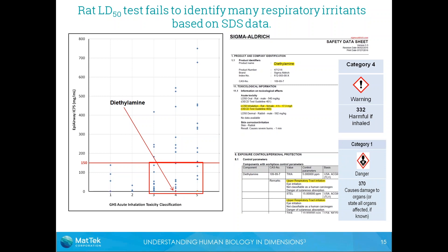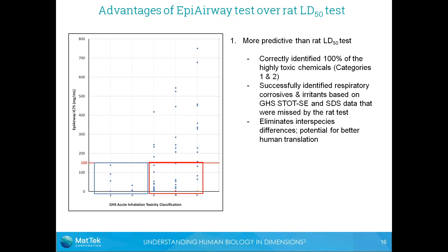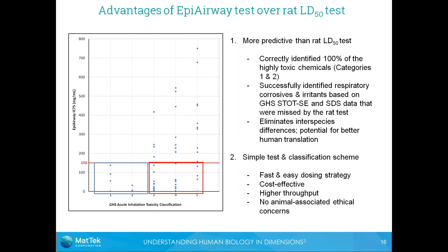In summary, there are significant advantages to using the EpiAirway test over the rat LC50 test. It is more predictive, correctly identifying 100% of the highly toxic category 1 and 2 chemicals, which is critical for hazard and risk assessment. It also successfully identifies respiratory corrosives and respiratory irritants based on STOT classification data that were not captured by the rat test. Furthermore, it eliminates interspecies differences for better translation to human experience, and it is simpler, faster, and easier to dose — making it higher throughput, cost-effective, and free of animal ethical concerns.